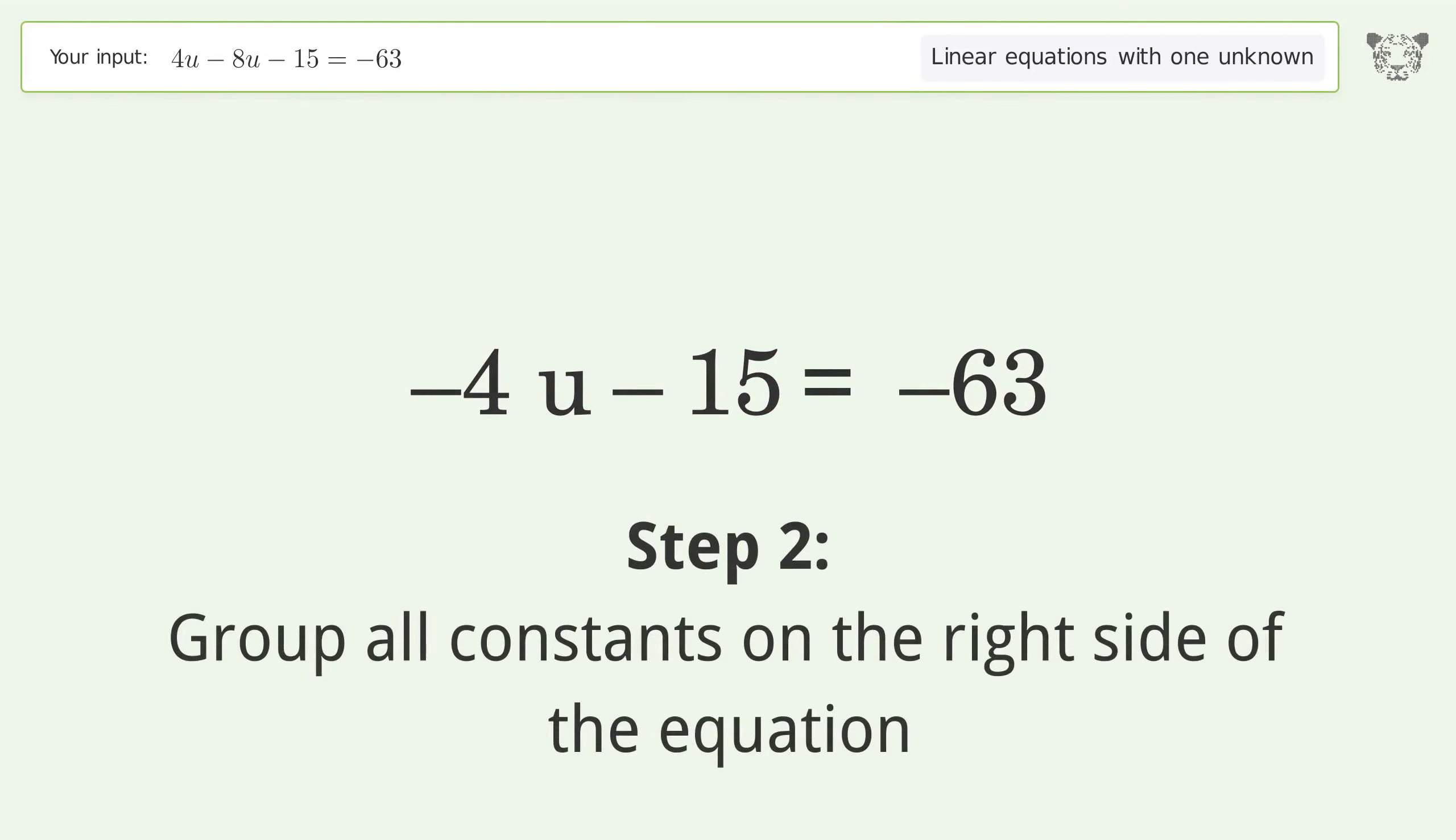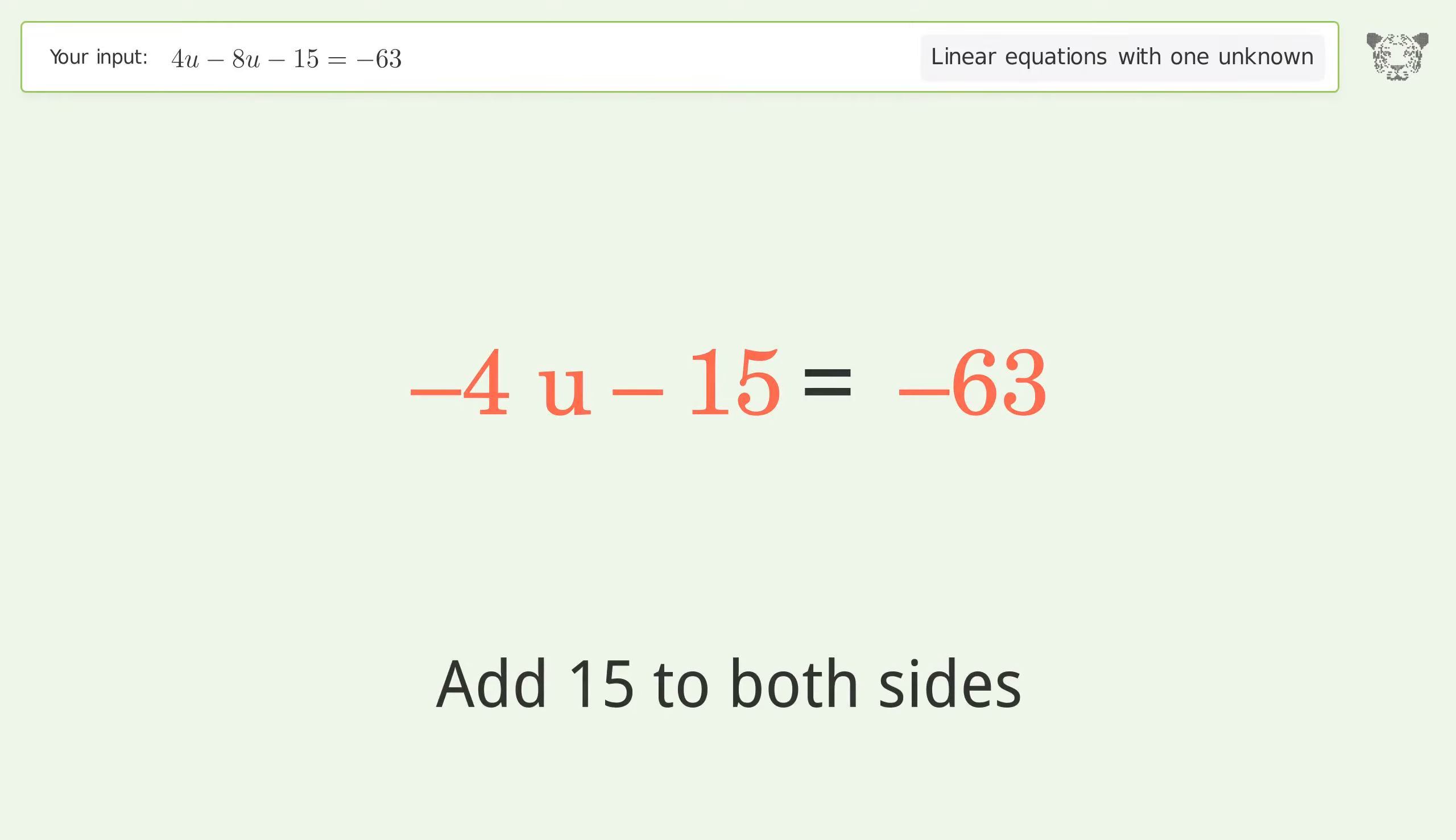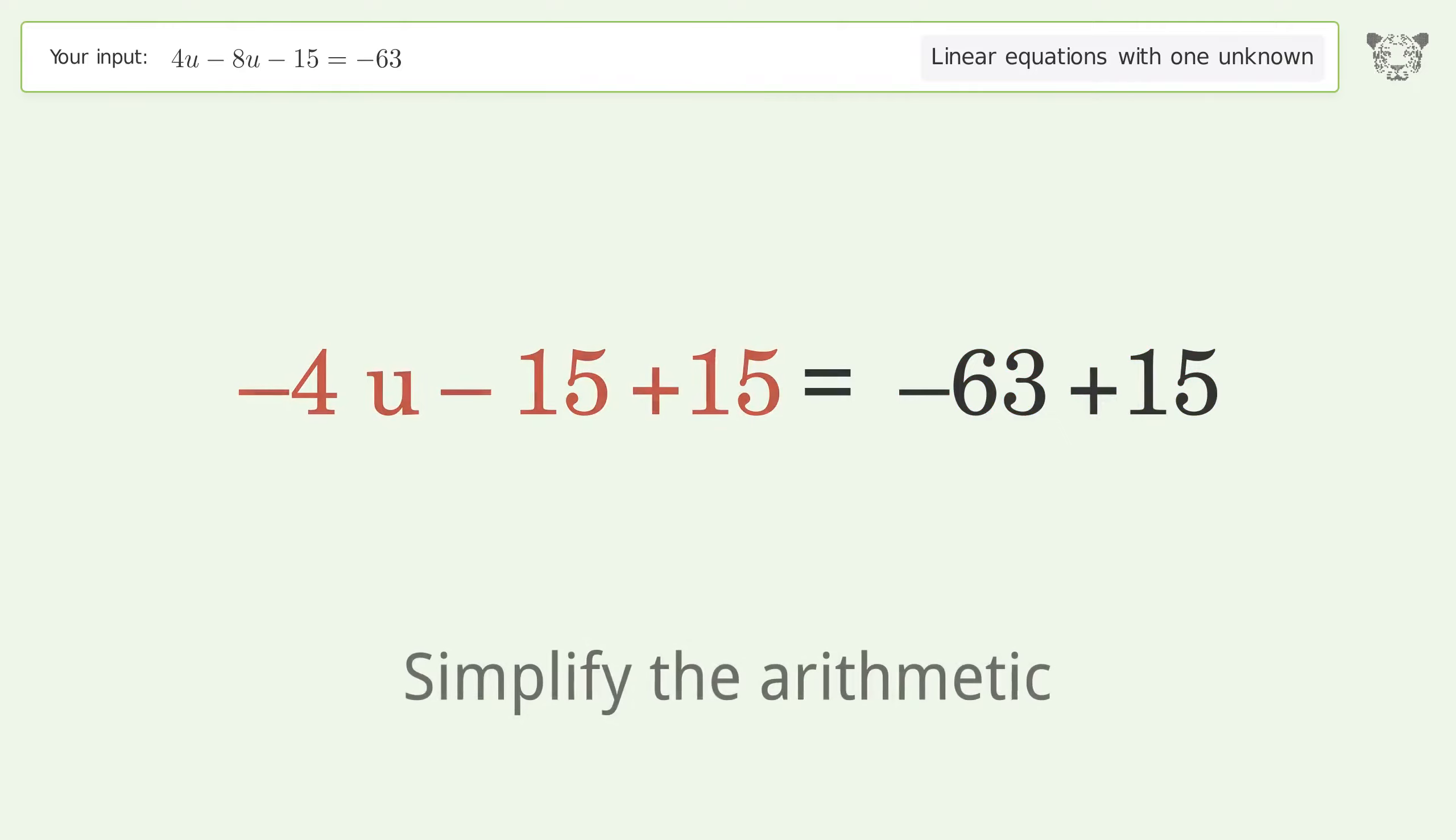Group all constants on the right side of the equation. Add 15 to both sides, then simplify the arithmetic.